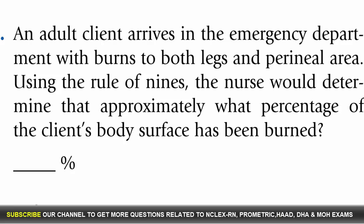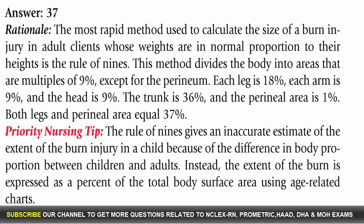Question 81: An adult client arrives in the emergency department with burns to both legs and perineal area. Using the rule of nines, the nurse would determine that approximately what percentage of the client's body surface has been burned? Answer: 37%. Rationale: The rule of nines divides the body into areas that are multiples of 9%, except for the perineum. Each leg is 18%, each arm is 9%, the head is 9%, the trunk is 36%, and the perineal area is 1%. Both legs and perineal area equal 37%.